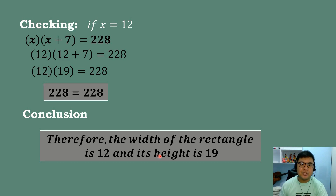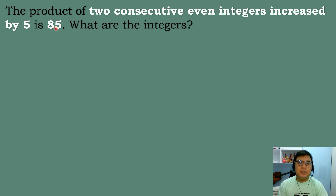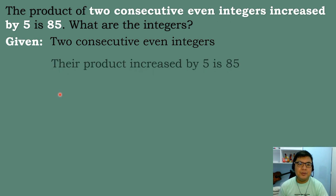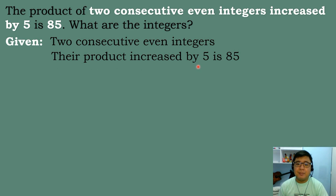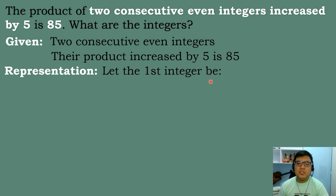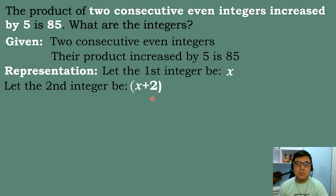Let's solve our second example. The product of two consecutive even integers increased by 5 is 85. What are the integers? Let's identify the given: two consecutive even integers, and their product increased by 5 equals 85. Let's represent the problem: the first integer is x, and the second integer is x plus 2, because they are two consecutive even integers.